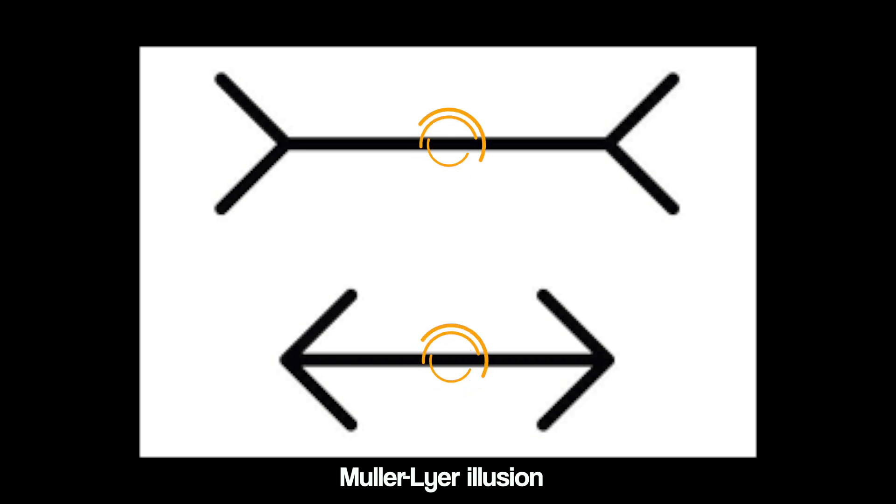Now I know at this point you probably know what's going on, but be honest — what do your eyes see? Your eyes should see that the two horizontal lines are different lengths, with the top one longer than the other. However, knowing what you now know, you won't be surprised to learn that they are exactly the same length. Again, if you don't believe me, grab your ruler and measure them.